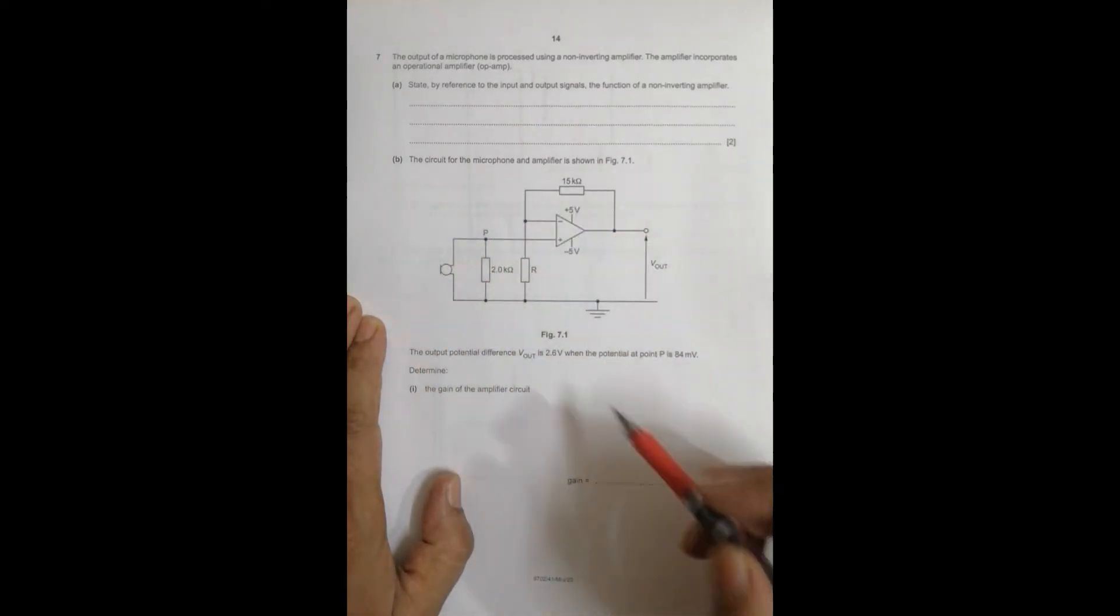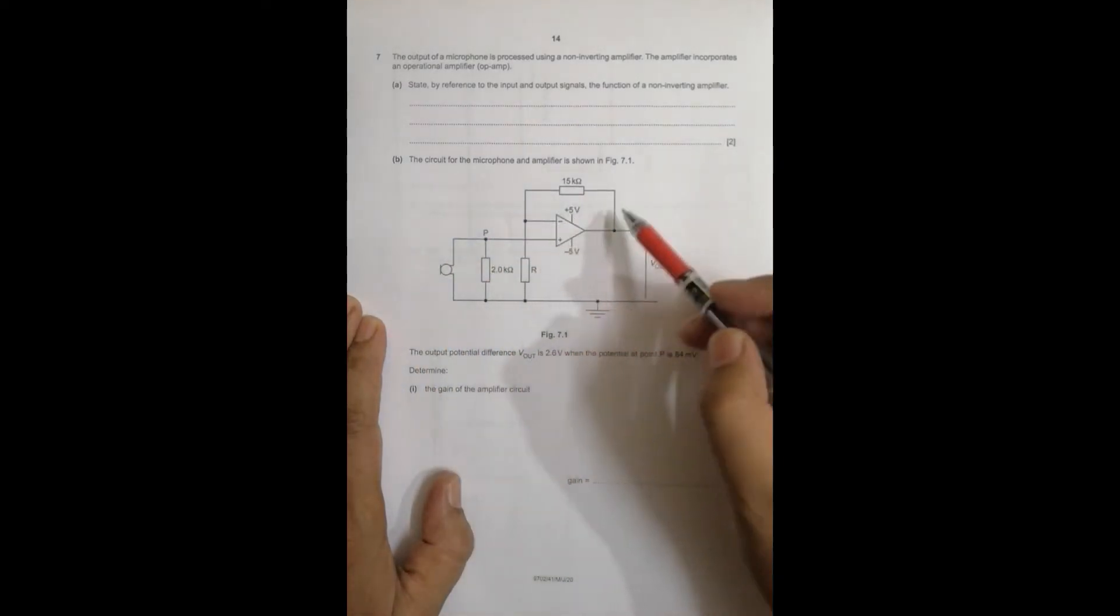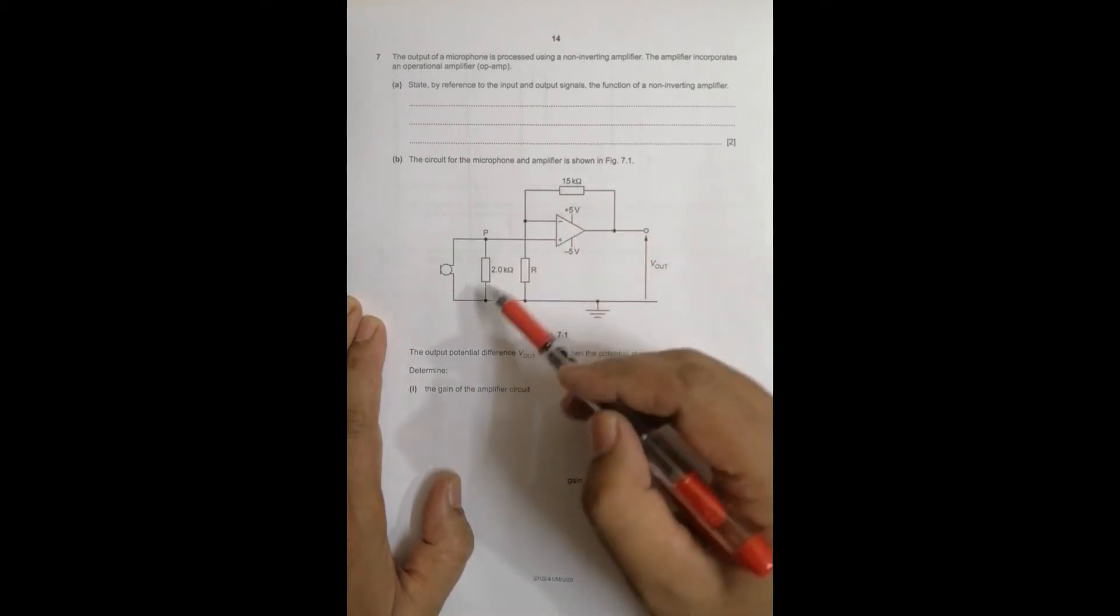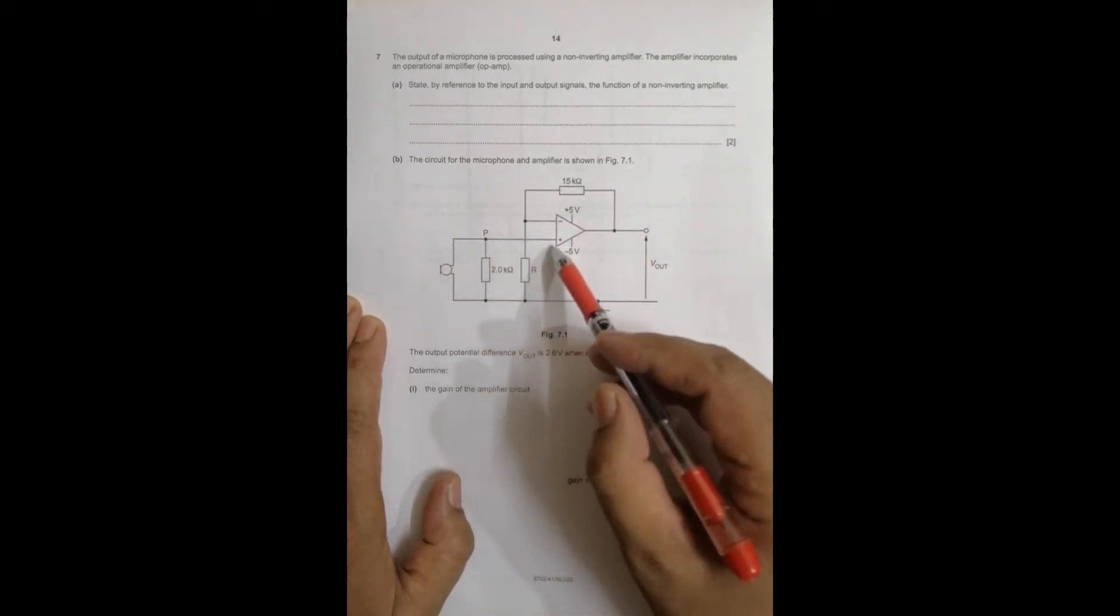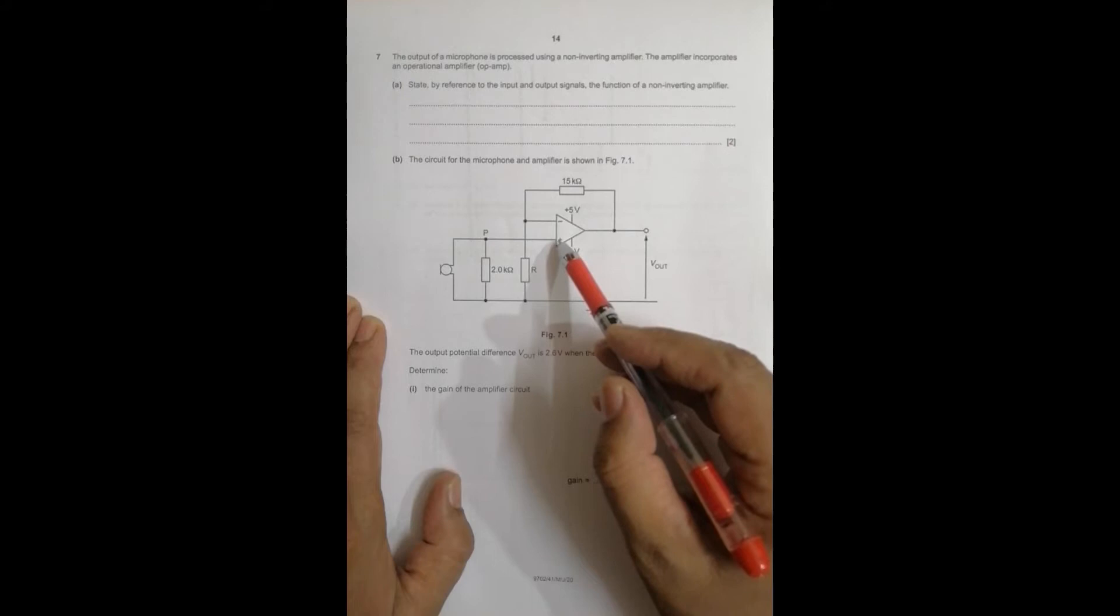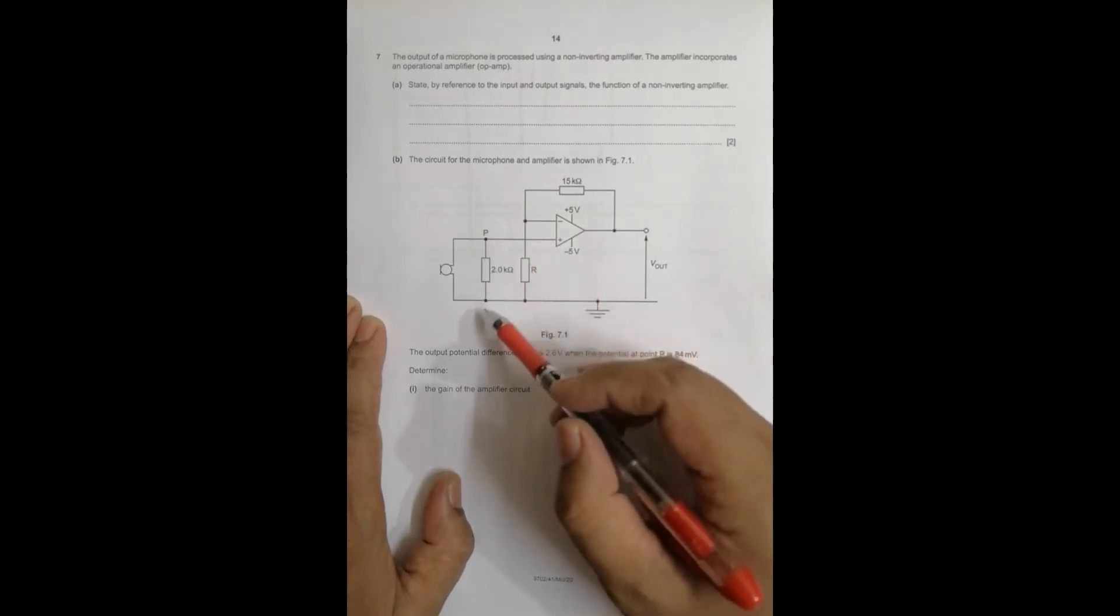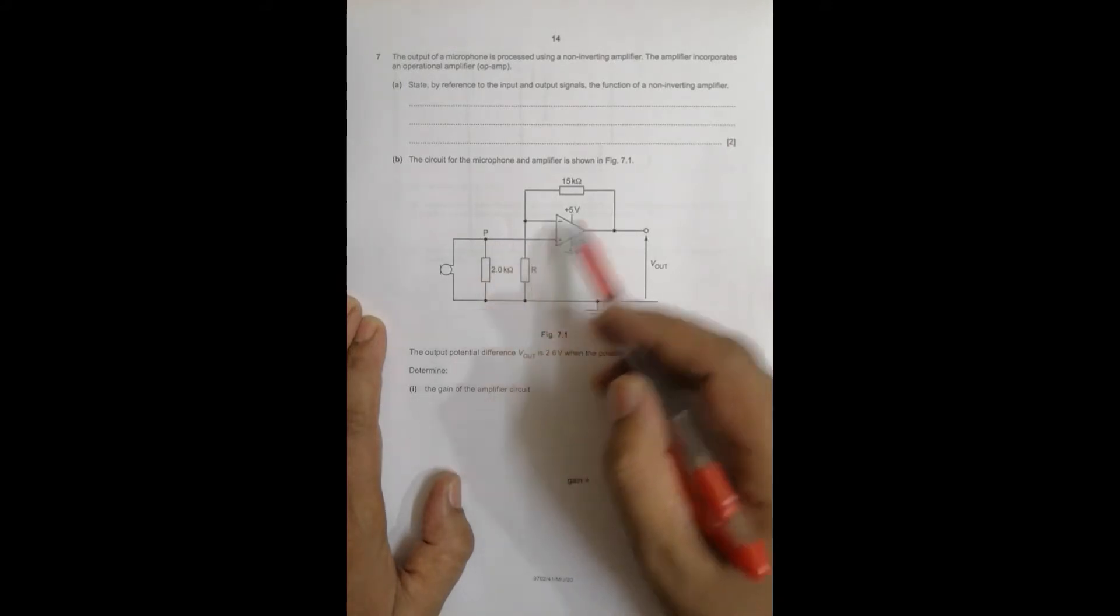The circuit given here, so here we have the circuit here, this is the feedback resistor. Input has been given to the positive, so this is non-inverting input, so this amplifier will be the non-inverting amplifier as said here.